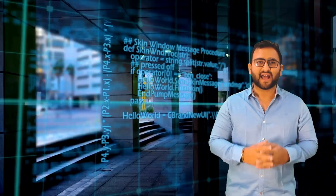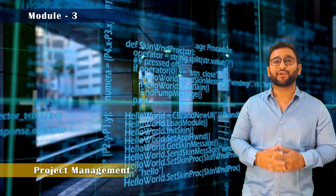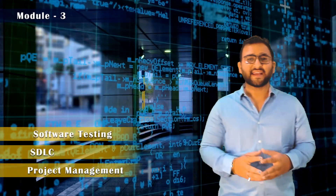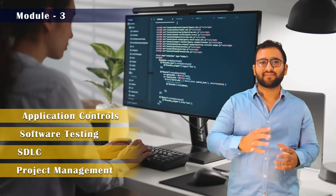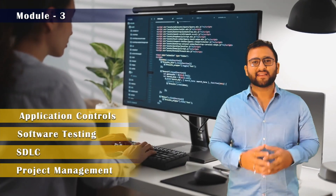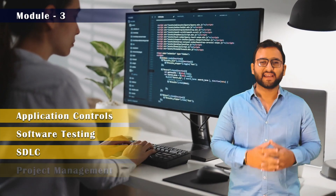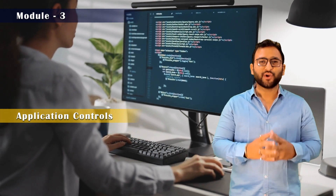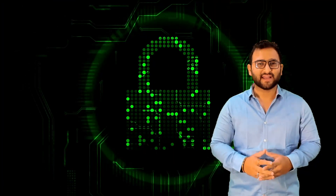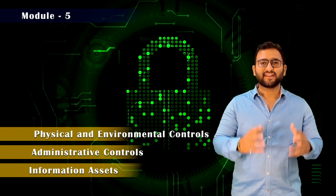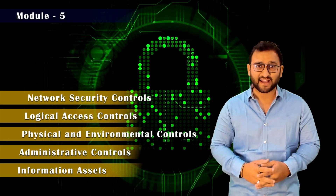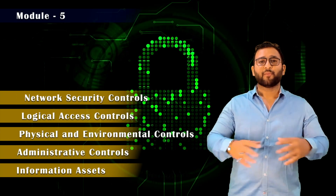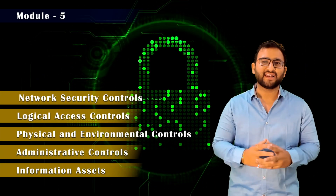Then you will go to Module 3. In Module 3, you will learn how to support the SDLC process, develop software, and manage projects. After Module 3, you move to Module 5, where you learn how to develop systems ready for application controls and how to implement controls in an organization.